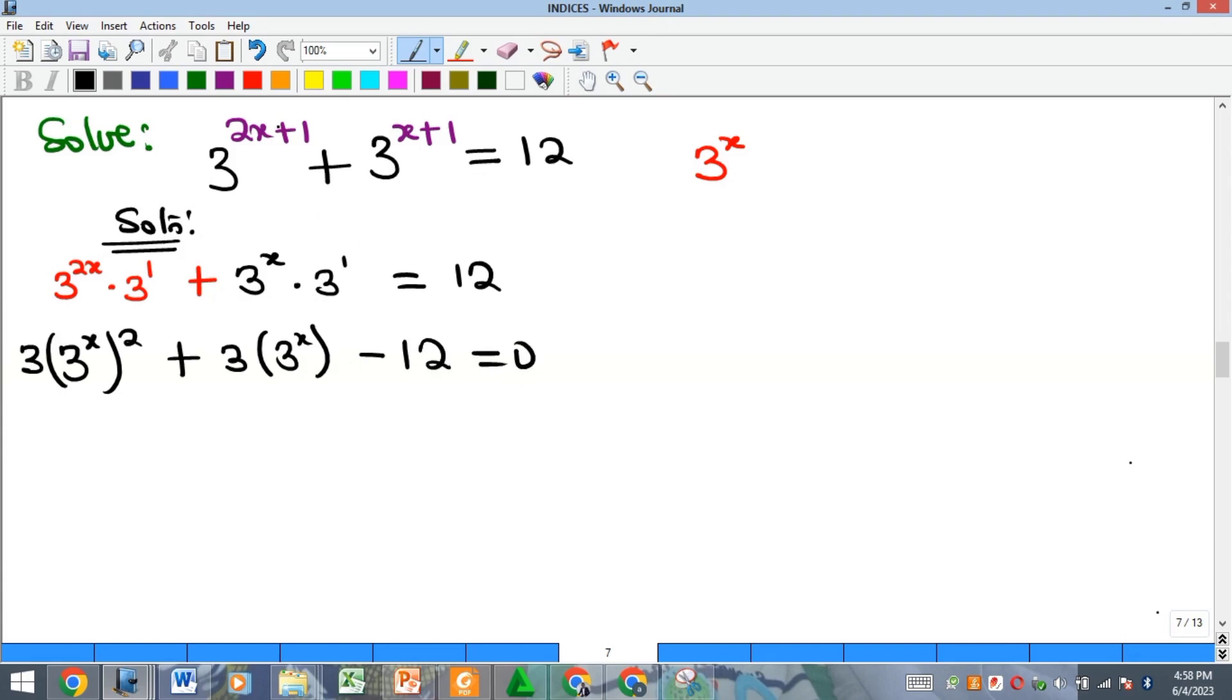Okay, so from here we can see that if I let my 3 raised to the power of x be equal to, let's say k, so it means now that my equation will now become 3k squared plus 3k minus 12, that is equal to 0.